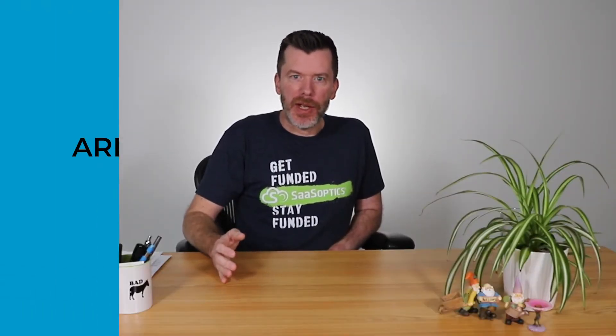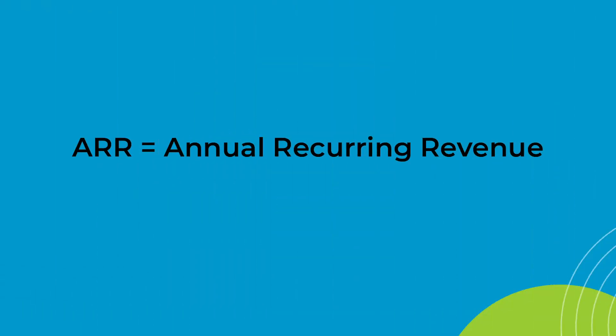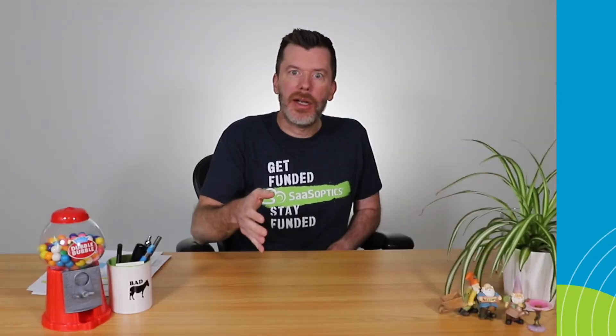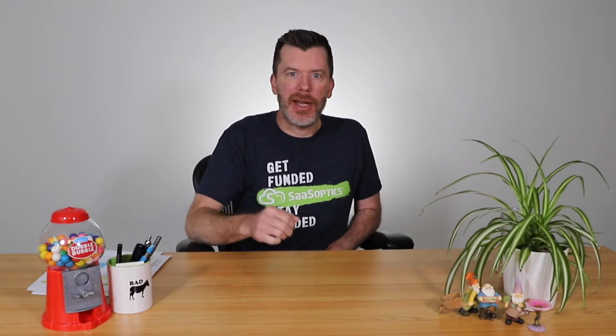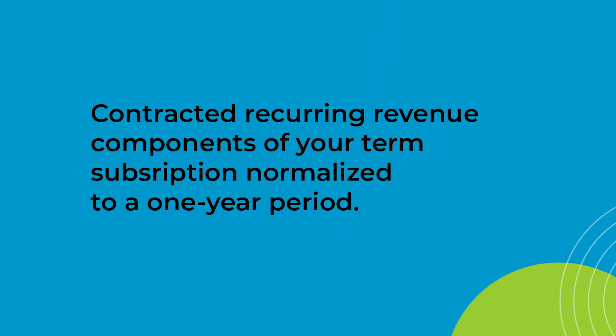We spoke about the definition of annual recurring revenue, or ARR. Today we're going to talk about how to calculate ARR. ARR is defined as the contracted recurring revenue components of your term subscription normalized to a period of one year.